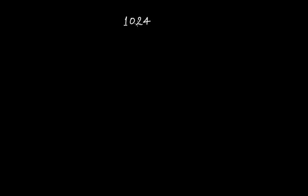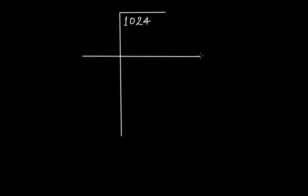Next example: 1024. So first draw the horizontal line, vertical line, and another horizontal line. Make pairs: 24 and 10. Now think of a number whose square is either equal to 10 or less than 10. Clearly you cannot have a perfect square equal to 10, so put 3 here — 3 times 3 is 9. Subtract it and you get 1.